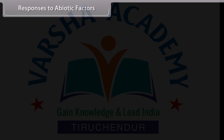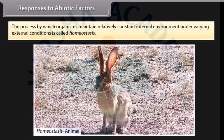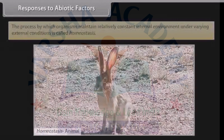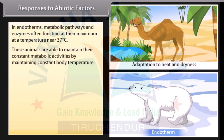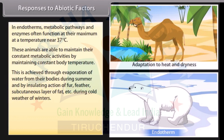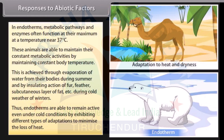Responses to abiotic factors: The process by which organisms maintain a relatively constant internal environment under varying external conditions is called homeostasis. In endotherms, metabolic pathways and enzymes often function at their maximum at a temperature near 37 degrees Celsius. These animals maintain constant metabolic activities by maintaining constant body temperature, achieved through evaporation of water from their bodies during summer, and by the insulating action of fur, feathers, and subcutaneous layers of fat during cold winters. Thus endotherms remain active even under cold conditions by exhibiting adaptations to minimize heat loss.